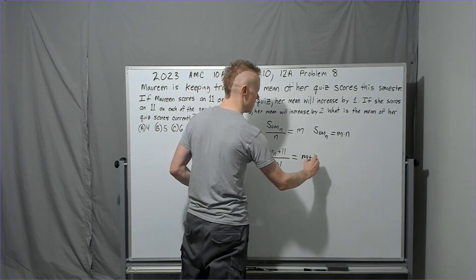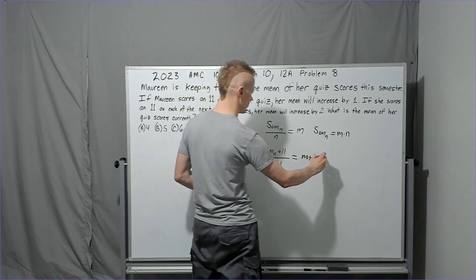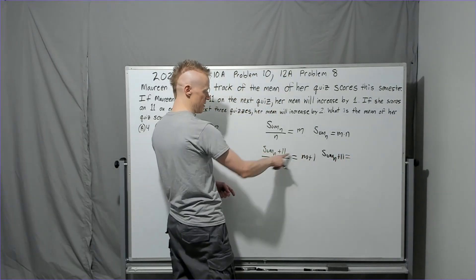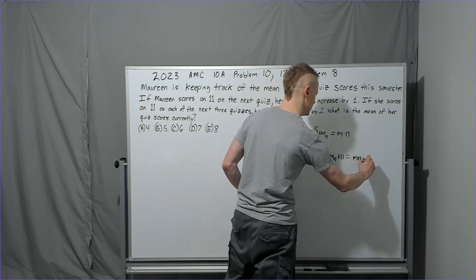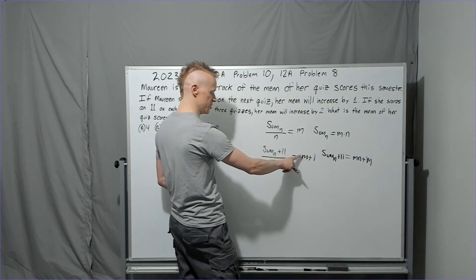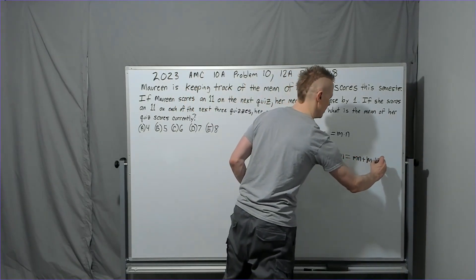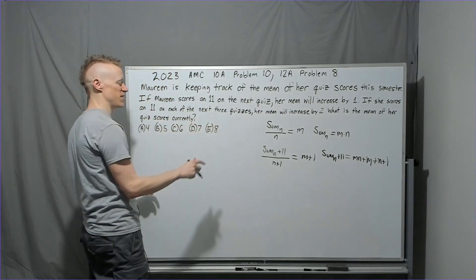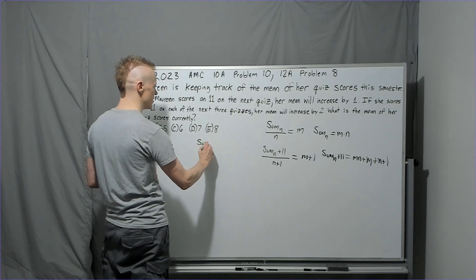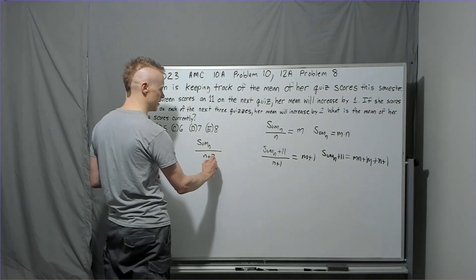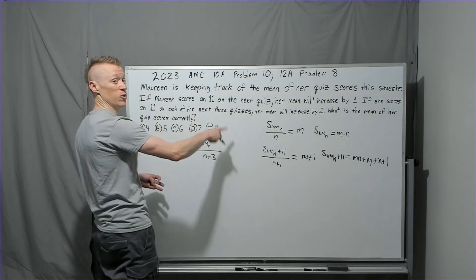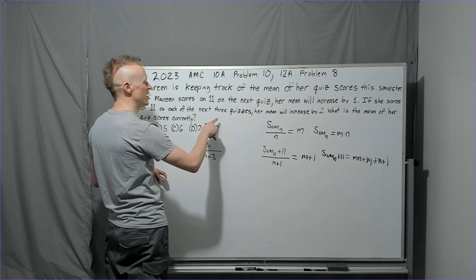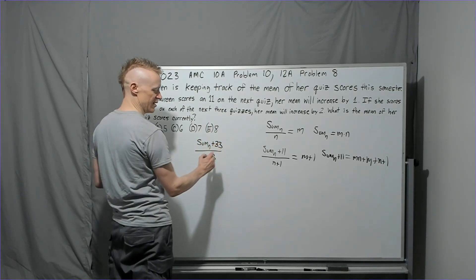Cross-multiplying: m·n + 11 = (m + 1)(n + 1) = mn + m + n + 1. So 11 = m + n + 1, meaning m + n = 10. For the second condition: if she scores 11 on each of the next three quizzes, (m·n + 33)/(n + 3) = m + 2. Cross-multiplying: m·n + 33 = (m + 2)(n + 3) = mn + 3m + 2n + 6.